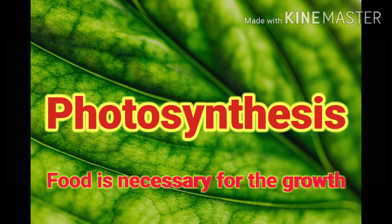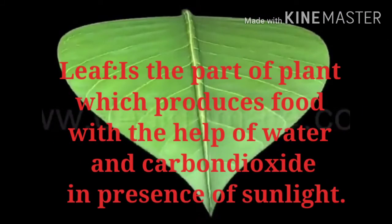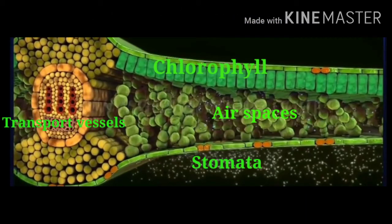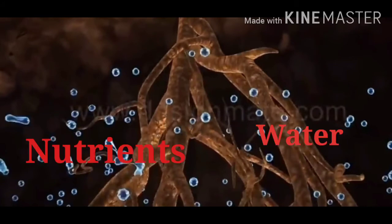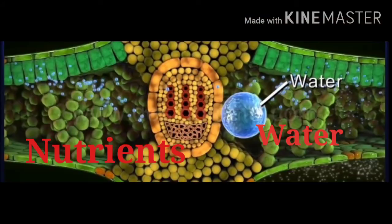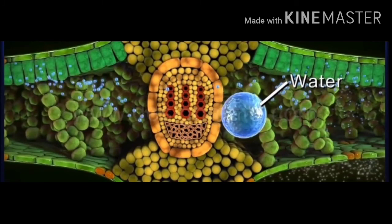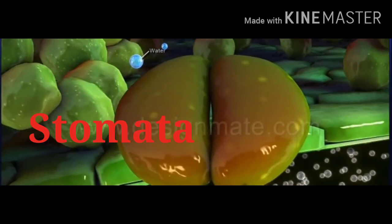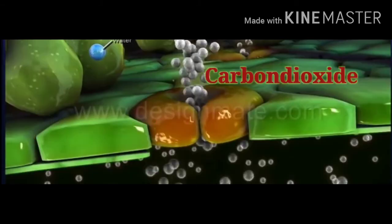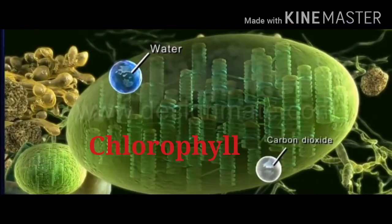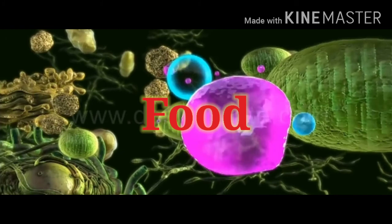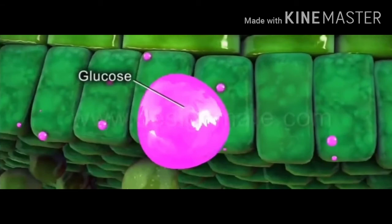Photosynthesis. Food is necessary for growth. Leaves of plants produce food with the help of a green color pigment called chlorophyll. Due to the presence of these green pigments, the leaves of plants appear green in color. Inside the leaf, there are many transport vessels, air spaces and chlorophyll pigment. Water and nutrients absorbed by the roots are transported to the chlorophyll in the leaves through transport vessels to produce food. When sunlight falls on the leaves, the tiny pores present on the leaves called stomata open, through which carbon dioxide gas is taken in. With the help of water and carbon dioxide, glucose — i.e. food — is produced in the chlorophyll and oxygen is released out through stomata. Glucose is then transported to various parts of the plant for growth and development.